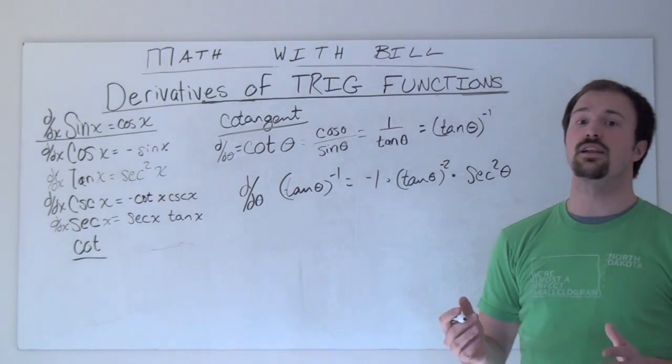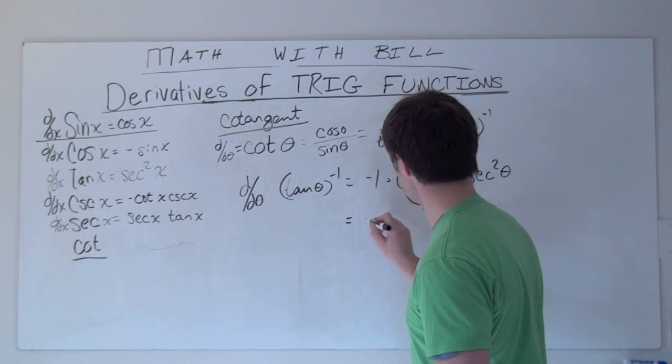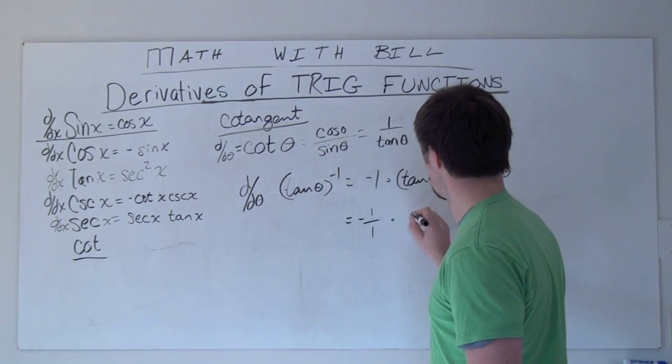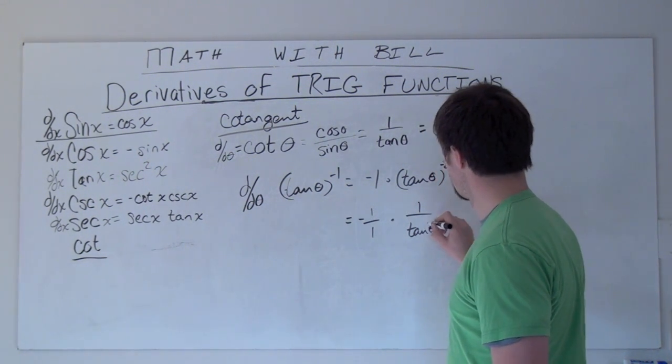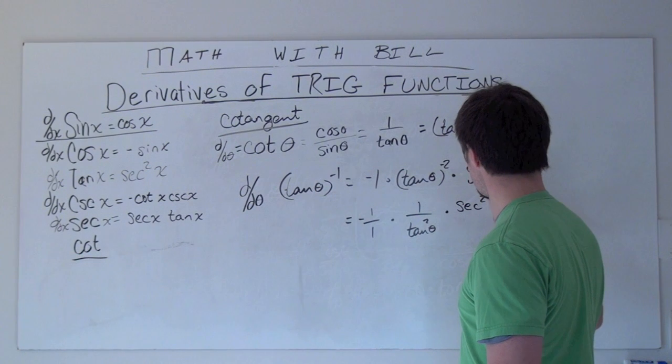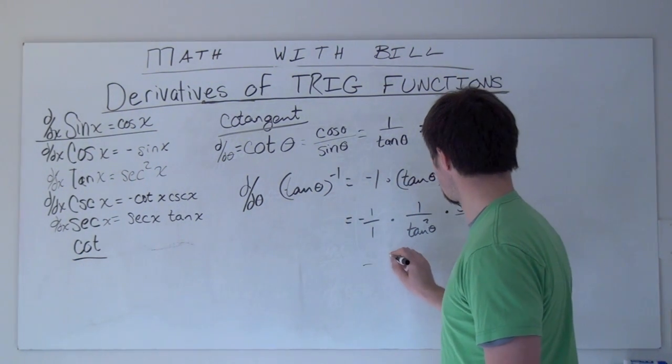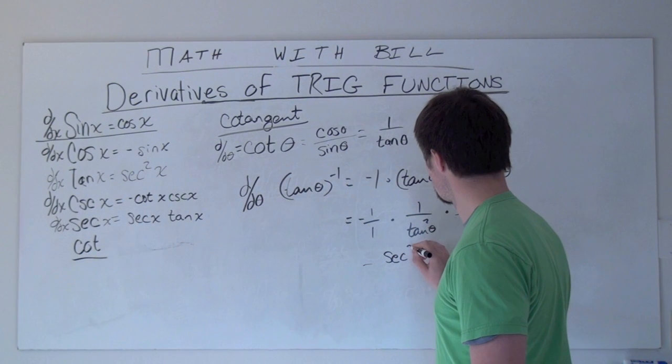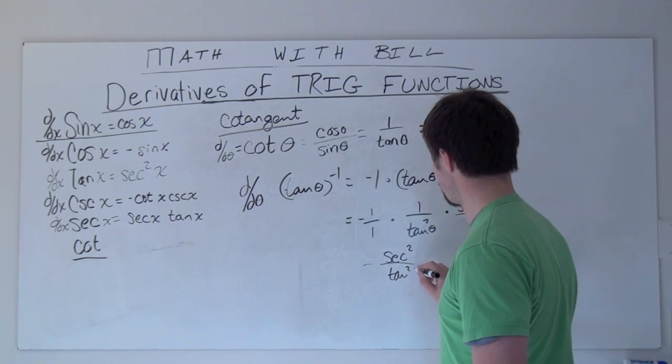What we need to do is clean it up a little bit. So, let's go about cleaning it up. I have negative 1 over 1 times 1 over tangent squared theta times secant squared theta over 1, or the opposite of secant squared divided by tangent squared.